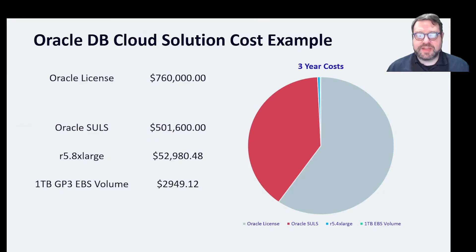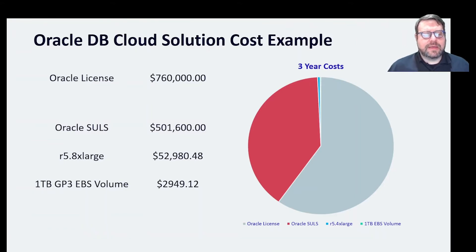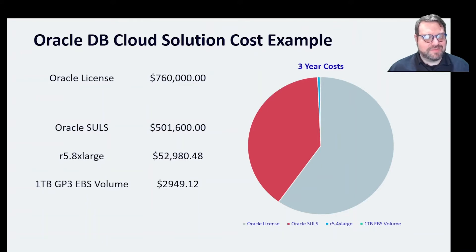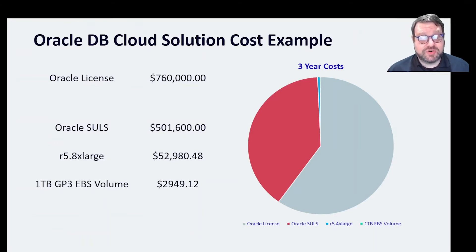This is a real slide I made for a customer several years ago in relation to a proposed greenfield deployment of an Oracle-based application stack in an AWS environment. I'd proposed an r5.8xlarge instance and a one-terabyte GP3 EBS volume — a large compute instance for a small concurrent OLTP workload — and I was getting a lot of pushback on the compute size. One of the DevOps people kept saying the r5.8xlarge was going to break the budget, and I just laughed and said let's look at the big picture.